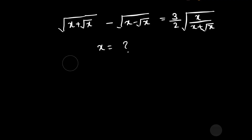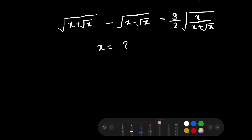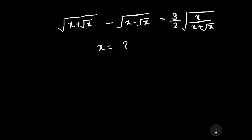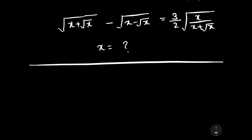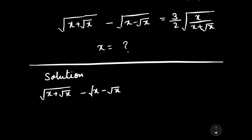Now let us start to solve this question. Our equation is: square root of (x plus square root of x) minus square root of (x minus square root of x) is equal to (3/2)x divided by square root of (x plus square root of x), which equals square root of x.